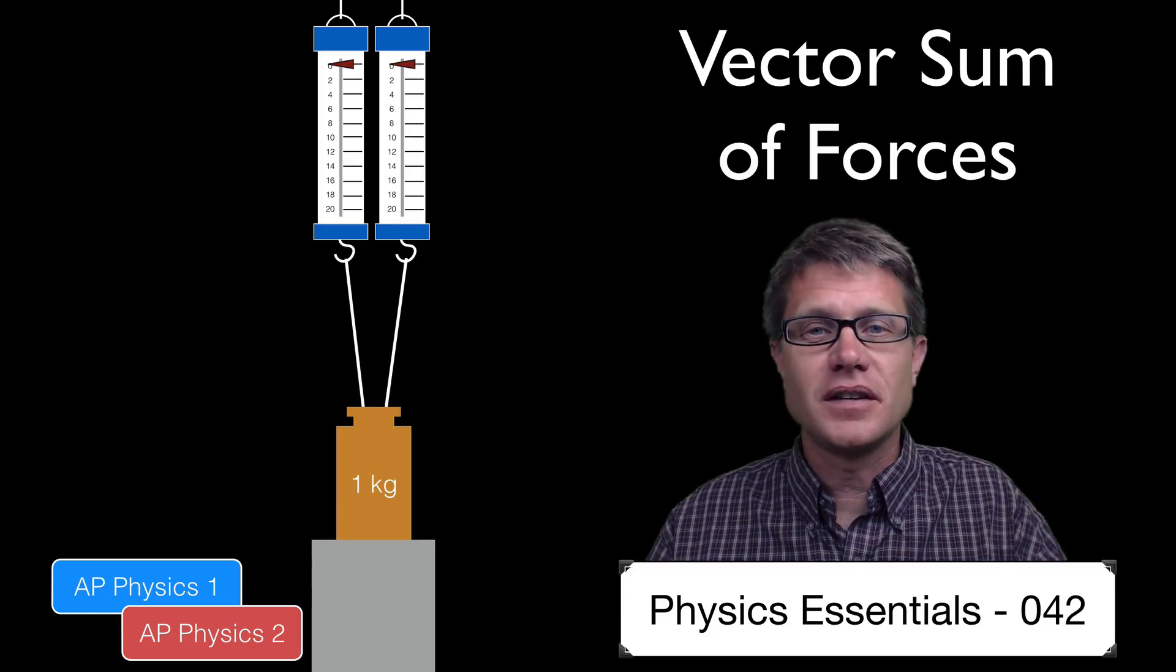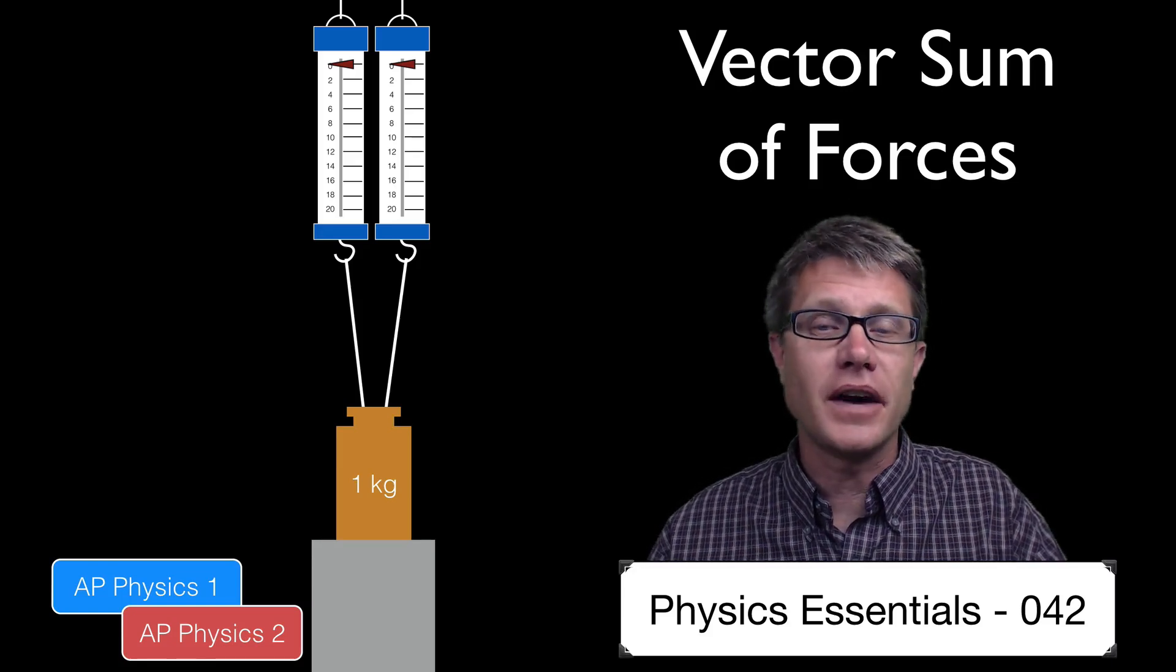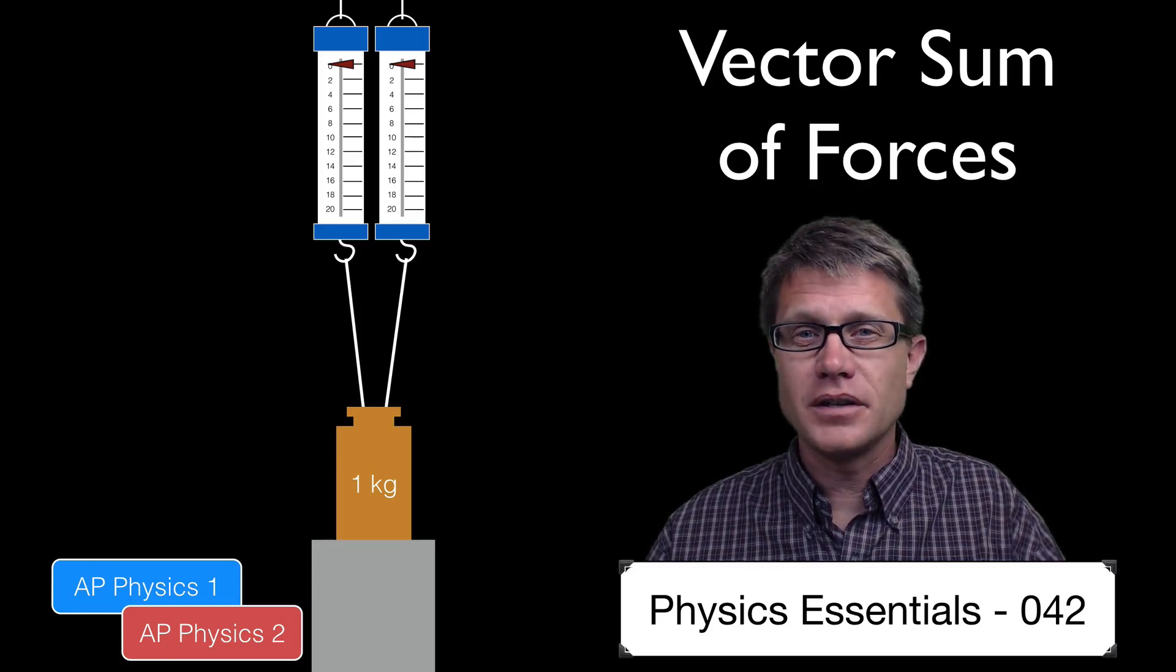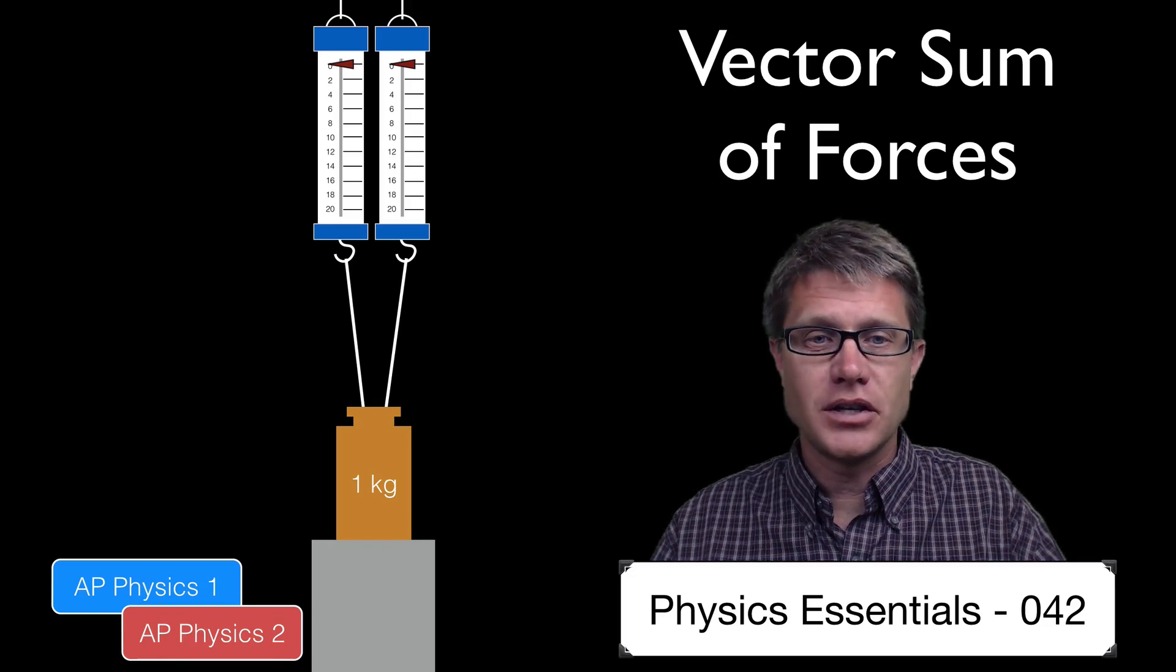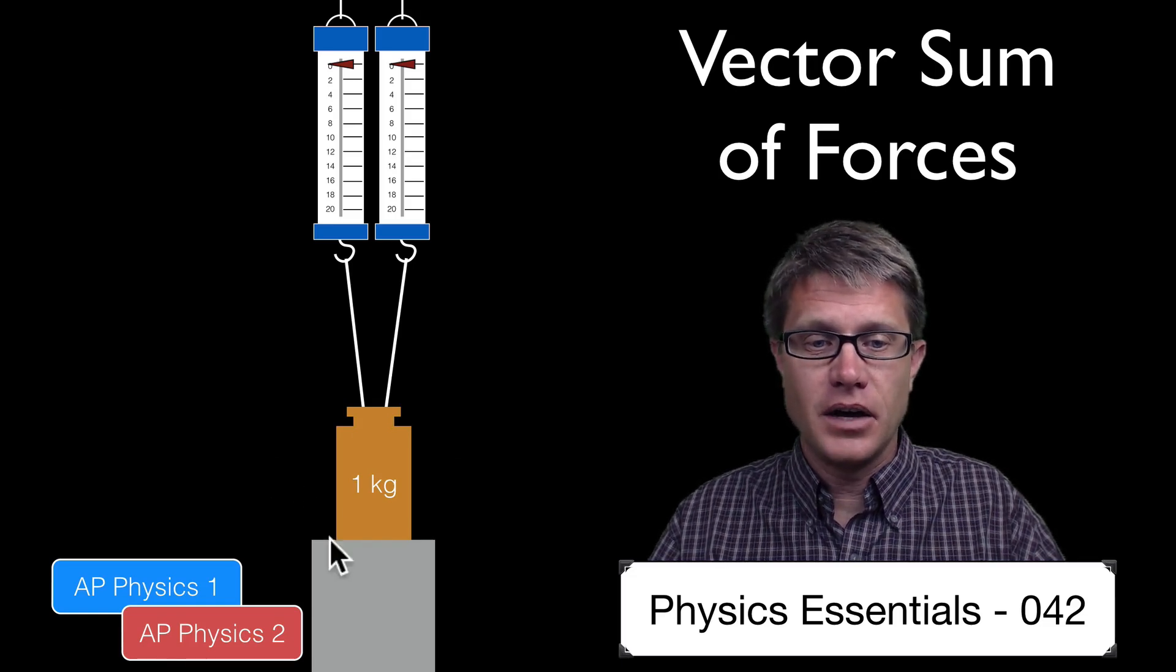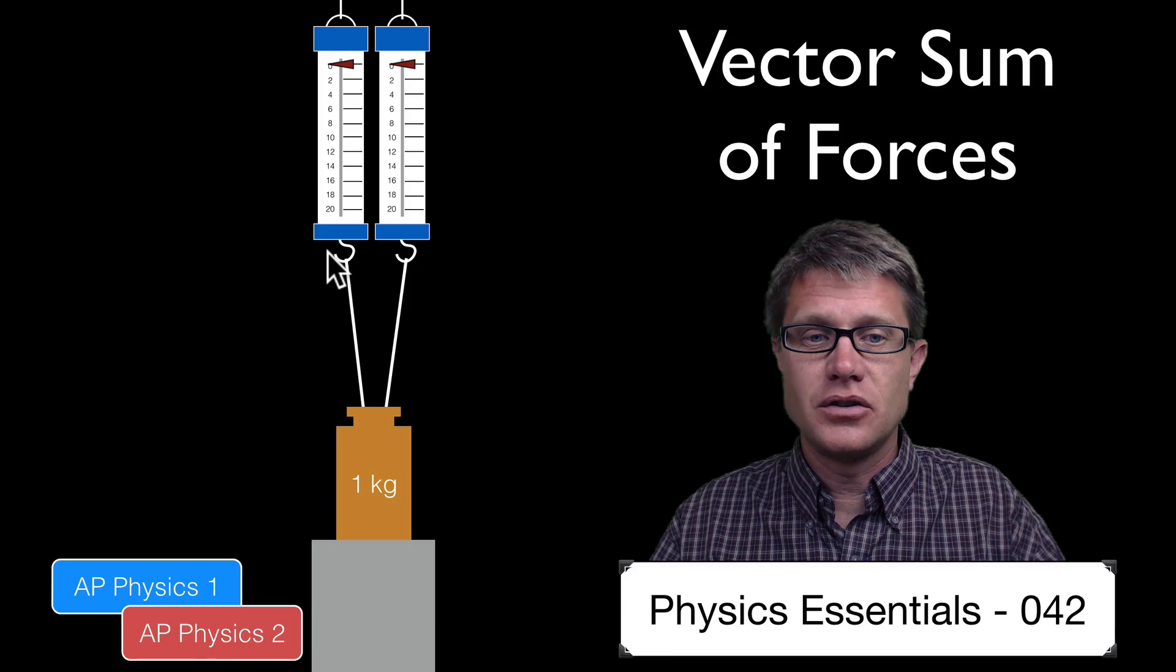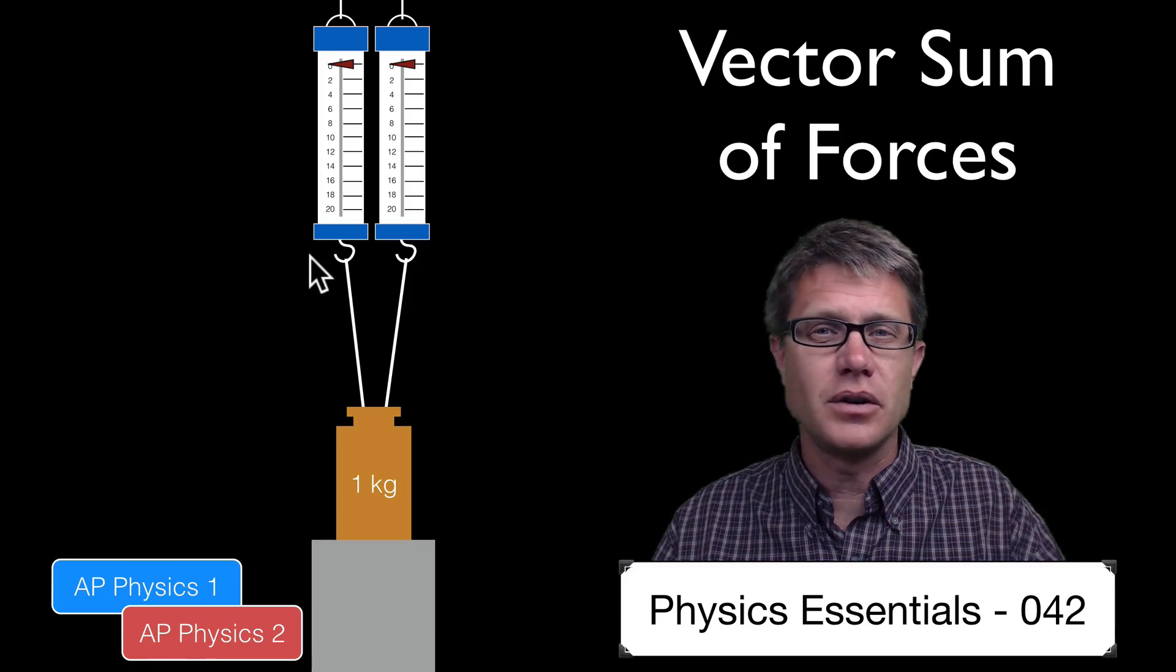Hi, it is Mr. Andersen and this is AP Physics essentials video 42. It is on the vector sum of forces. We are going to start with a simple demonstration. Imagine that I have a 1 kilogram mass attached to 2 force meters. Again these measure in newtons.